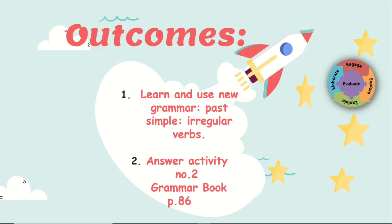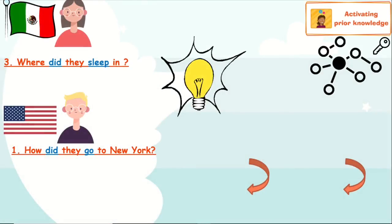To describe events that happened in the past — yesterday, last month, last summer, or long, long time ago — any time before now, we use the past tense. Let's remember together the holidays of Elsa and Pito. How were their holidays last year? Let's try to describe their holidays. We're going to start with Elsa.